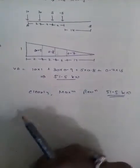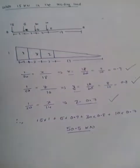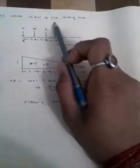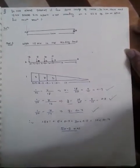Comparing both cases — 50.5 kN and 51.5 kN — we can clearly see that 51.5 kN is the maximum reaction, occurring when the 10 kN load is the leading load. So the maximum reaction is 51.5 kN. If you have any doubts, you can contact me on my email ID.